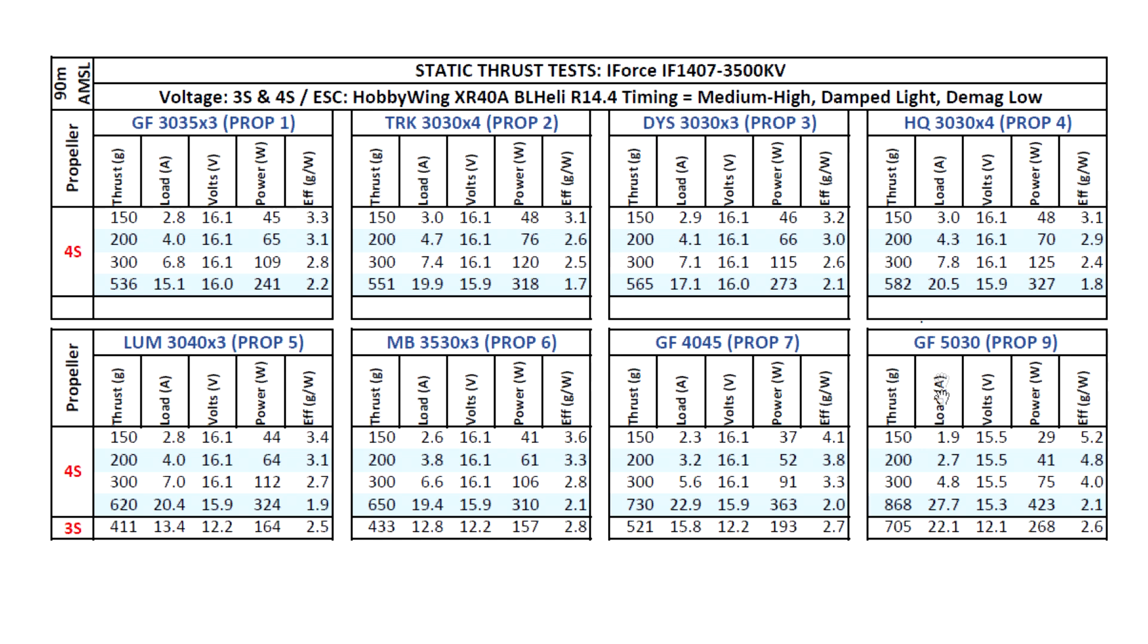I also went ahead and tested the 5030 prop, just to see what it will do. A lot of people want to see what these tiny motors will do with the 5-inch prop, although my opinion is that's too large a prop for this motor, but there are some people that like to run it on super light frames. So there it is, 868 at 27.7 amps, pretty high amps, but of course this will go down as soon as you're flying, it'll be a lot less than in the thrust stand. The thrust stand exaggerates the amount of amps and thrust, so amps are going to be anywhere from 25% to 35% less, and thrust is also going to be less.